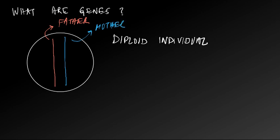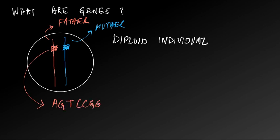A gene is just a section of this chromosome. The section of the chromosome represents some sequence of DNA. So if we take this gene, there will be some sequence of DNA that corresponds to the gene.